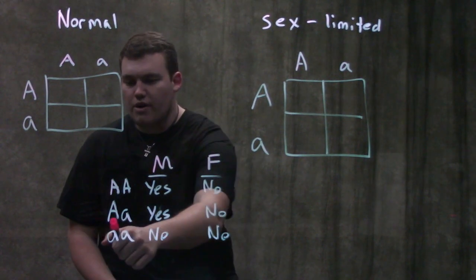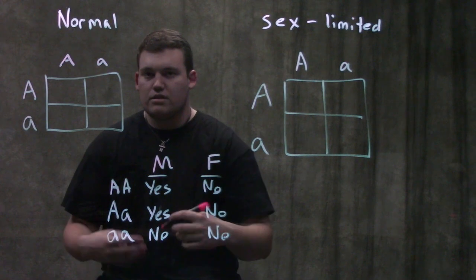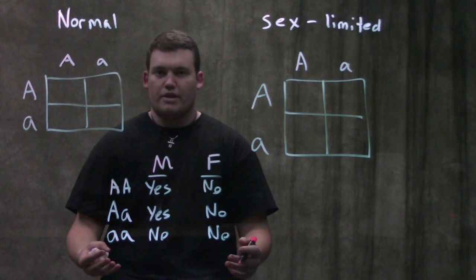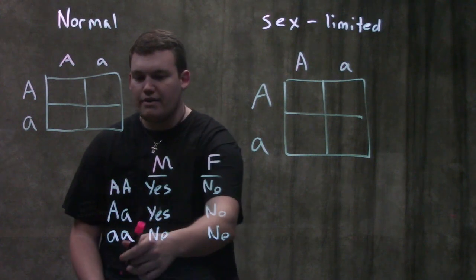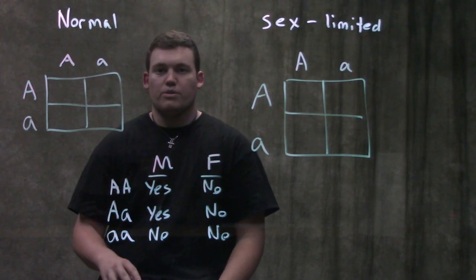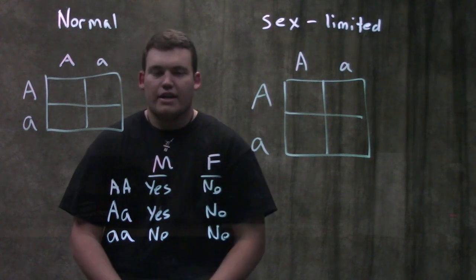So then we go down to our heterozygote here. And again, because it's a dominant trait, our male is going to show it. But our female here is not going to show it again. And then when we go down here, just like any other trait, if it's a dominant trait and your homozygote is recessive, you're not going to show it. That's why neither our male nor our female here are going to have the trait.